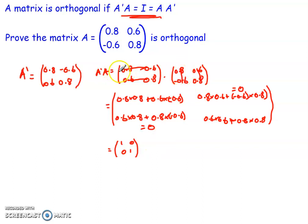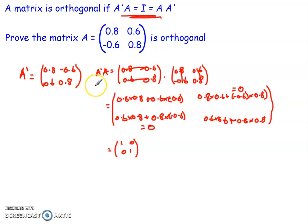If we reverse the order and compute A times Aᵀ, the entries are the same — only the signs in the off-diagonal swap, but because both off-diagonal products cancel just as before, the result is still the identity matrix. So for an orthogonal matrix, both AᵀA = I and AAᵀ = I hold. These are the key rules associated with matrix multiplication, covering the associative, distributive, and commutative laws, and orthogonality.